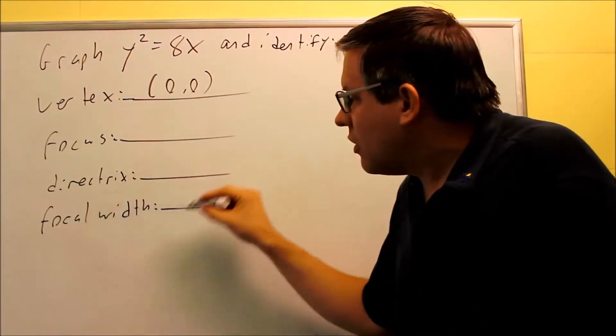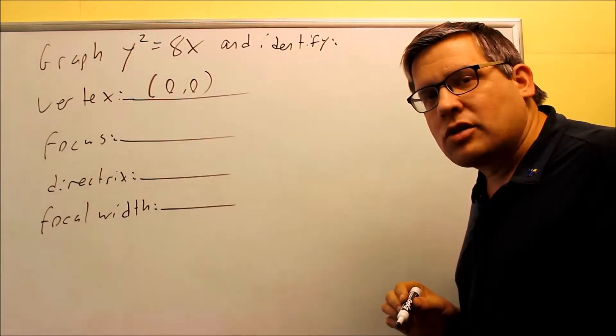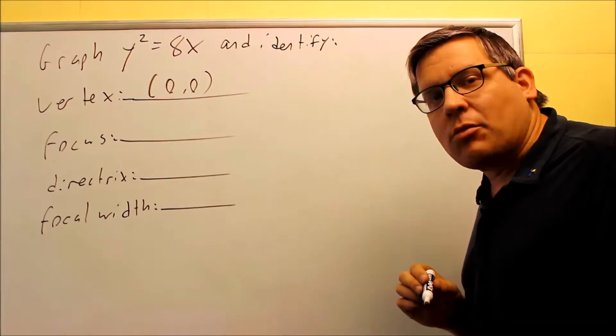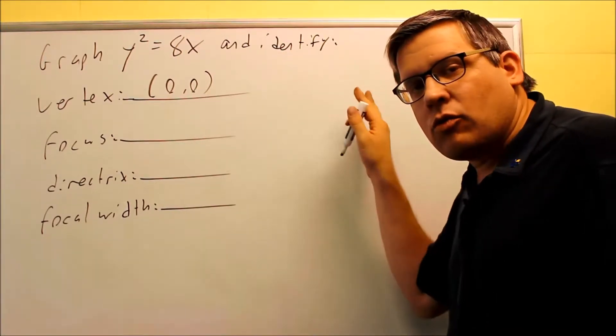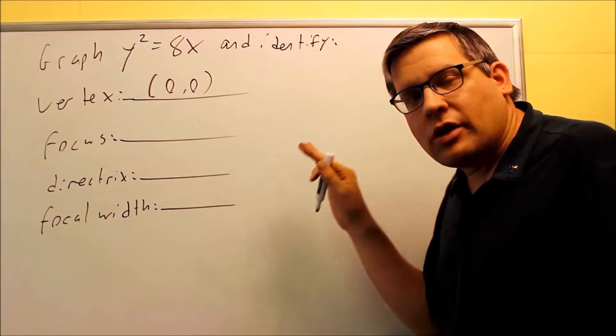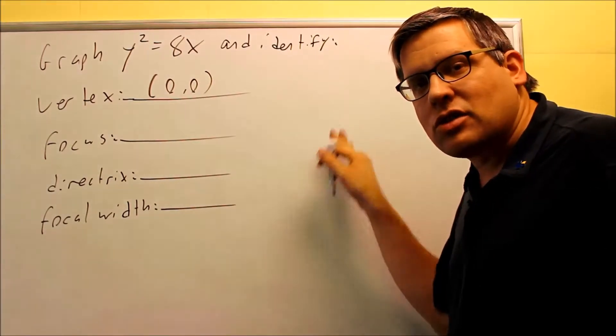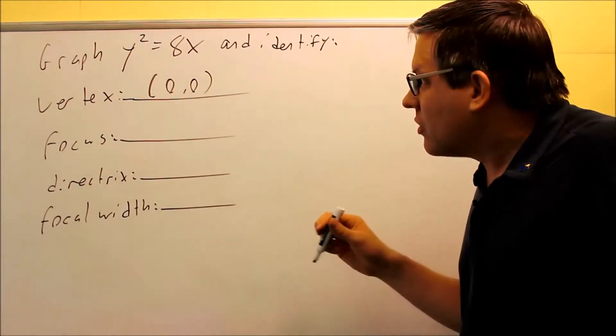Something else we can find is the focal width. The focal width, basically, is how wide the parabola is at its focus, and we'll take a look at that when we do the graph. That kind of detail, we need to actually see exactly how wide or narrow the graph is.